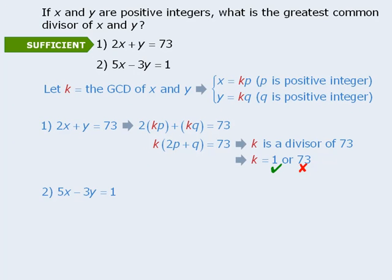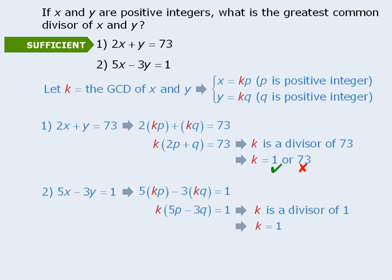Now on to statement 2. We can use similar logic here to show that statement 2 is sufficient. First we will replace x and y with kp and kq. Then when we factor out k on the left-hand side, we can see that k times some integer must equal 1. If this is true, then k must be a divisor of 1. And if k is a divisor of 1, then k must equal 1.